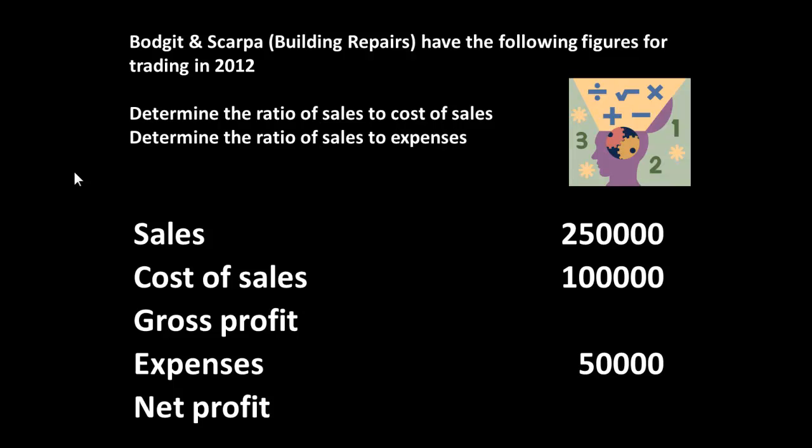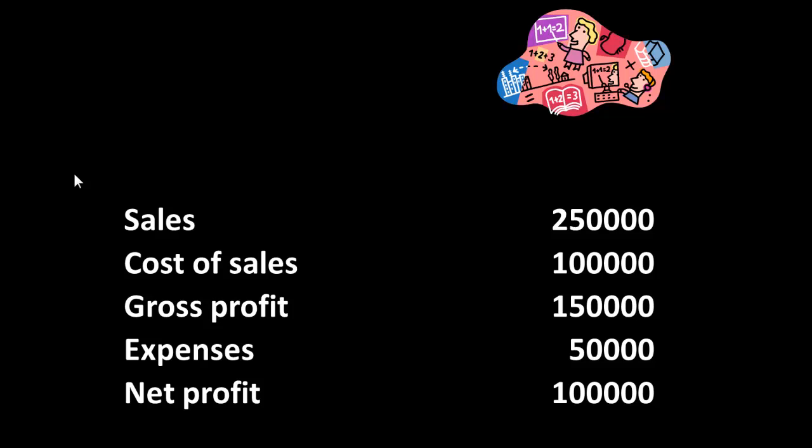And we're going to determine the ratio of sales to expenses. We have sales of 100,000 and expenses of 50,000. Then we are going to determine the ratio of gross profit to net profit — note there's nothing there at the moment, so we're going to have to determine what gross profit and net profit are. Let's start by doing the simple bit: gross profit is sales less cost of sales.